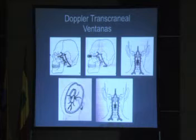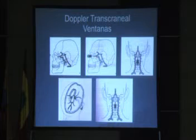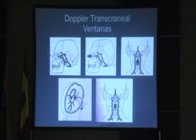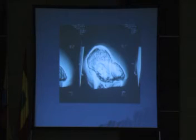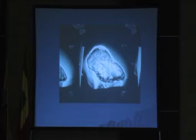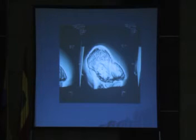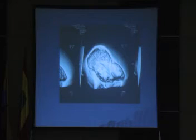Las ventanas que se utilizan para el examen de Doppler son la ventana transtemporal, transorbitaria y translucal o submaxilar. Todas tienen sus indicaciones y depende del vaso que uno quiera revisar y del espesor del hueso. ¿Cuál es la mejor ventana? La ventana sin hueso. Los pacientes niños son muy fáciles de examinar porque el hueso es delgadito; un paciente anciano de ochenta años es muy complicado porque el hueso no permite que pase la onda.